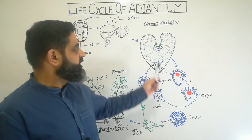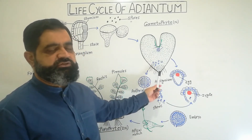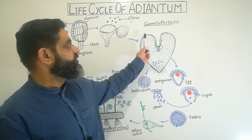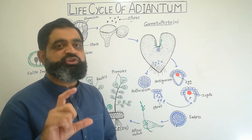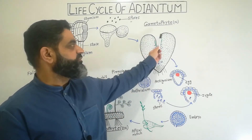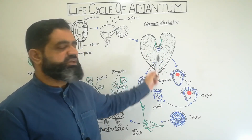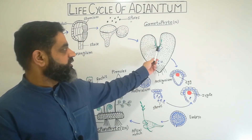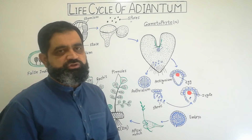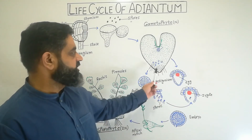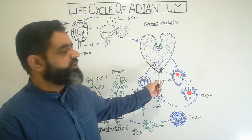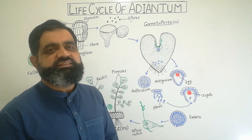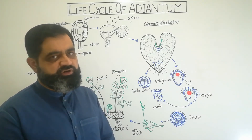The gametophyte is heart-shaped and has a notch on the upper portion which is its growing point. It has rhizoid root-like structures on the lower surface that absorb minerals and water. This gametophyte is known as the prothallus. The margins of the prothallus are thin while the middle is thick, like a cushion. Just near the notch is a structure known as the archegonium, the female reproductive part. On the lower surface near the rhizoids are structures known as antheridia, the male reproductive parts.